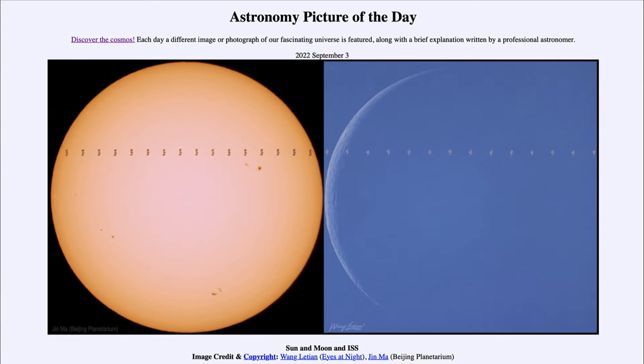Greetings and welcome to the Introduction to Astronomy. One of the things that I like to do in each of my introductory astronomy classes is to begin the class with the astronomy picture of the day from the NASA website, apod.nasa.gov/apod. Today's picture for September 3rd of 2022 is titled Sun and Moon and ISS.